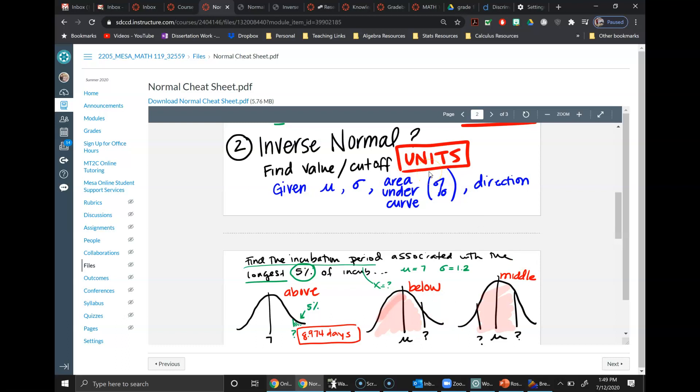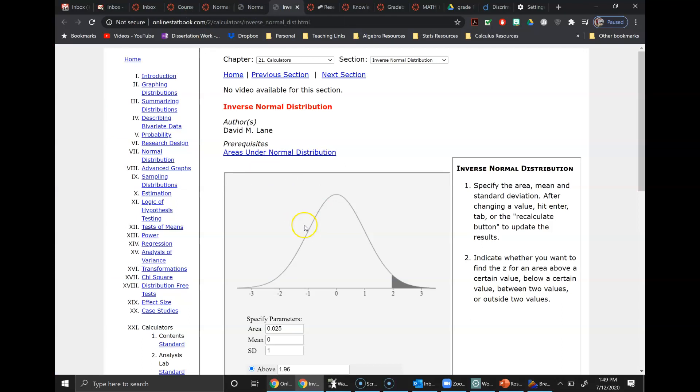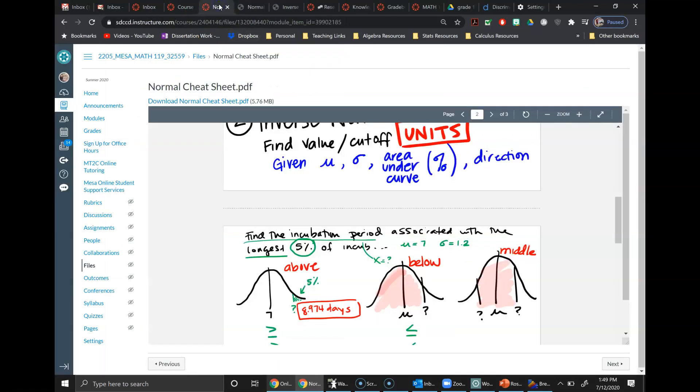And again, you're going to use the formula, those little calculators. In this case, you're going to use the inverse calculator. So this question we're still doing with the incubation theory. So our mean is still seven, our standard deviation is still 1.2, but we're looking for the longest five percent.